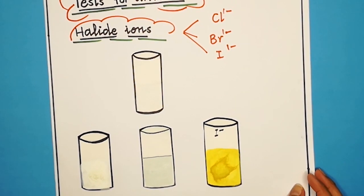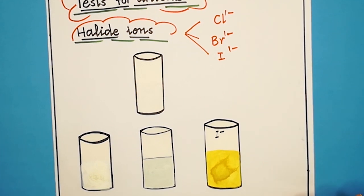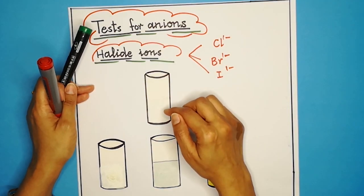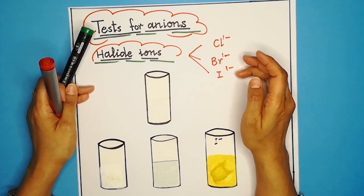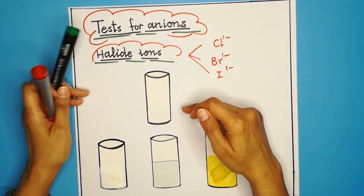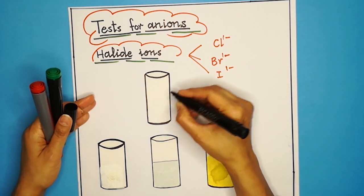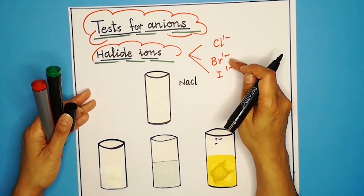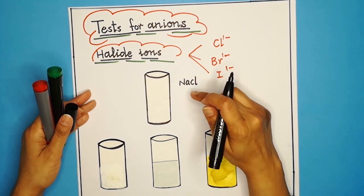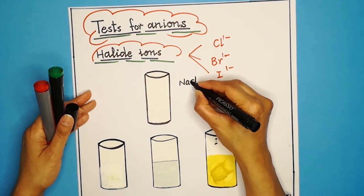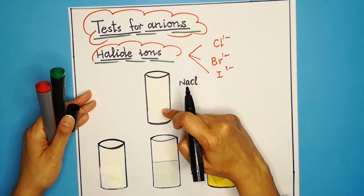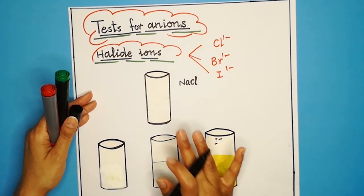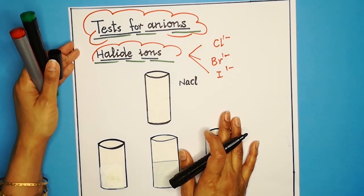First of all, we start with an unknown salt solution. We don't know whether this salt solution contains chloride ions, bromide ions, or iodide ions. For example, it may be a salt solution of sodium chloride, sodium bromide, or a salt containing iodide ions. We need to determine which halide ions are present.